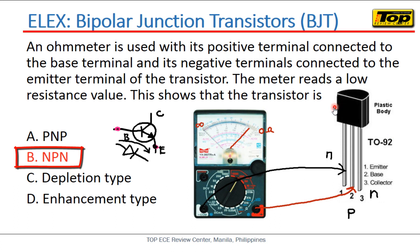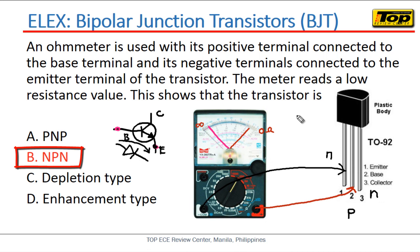Conversely, if the reading were high or infinite, that would indicate reverse bias. If it were reverse biased with the negative terminal on the emitter, the emitter would be P-type — making it a PNP. But in this case, the ohmmeter connection suggests forward bias, so with the negative terminal on the emitter, the emitter is N-type, confirming this is an NPN transistor.